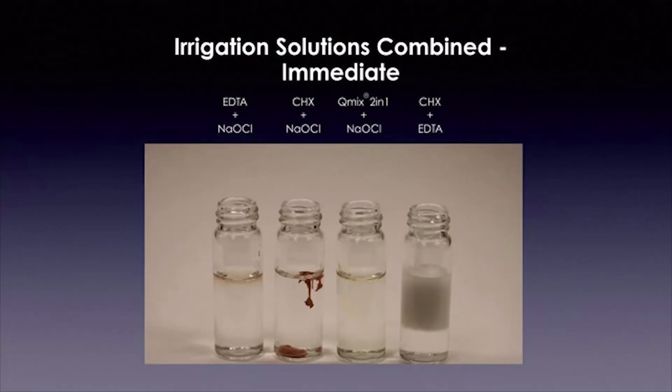QMix is more efficacious than using EDTA and chlorhexidine. Significantly, when you irrigate with chlorhexidine to kill bacteria at the end, it combines with residual sodium hypochlorite left in the canal and produces a precipitate. When you mix QMix and sodium hypochlorite, there is no precipitate. There is also no precipitate between EDTA and sodium hypochlorite. But once you expose the dentin with EDTA and want to kill the remaining bacteria, you cannot go back to sodium hypochlorite without causing dentin destruction — and if you go to chlorhexidine, you get a precipitate that blocks tubules and does more harm than good. QMix never creates a precipitate.